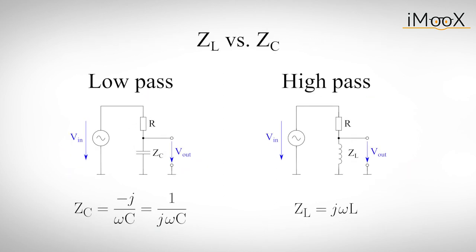As opposed to the impedance of a capacitor, which decreases for high frequency signals, the inductor's impedance will rise linearly with higher frequencies. Its impedance, ZL, is equal to j omega L, where, similar to the capacitor, the j stands for the imaginary unit, omega for the angular frequency and L for the inductance.